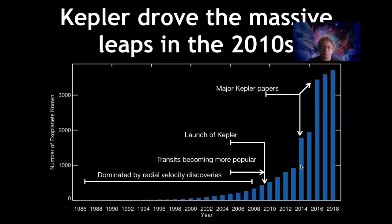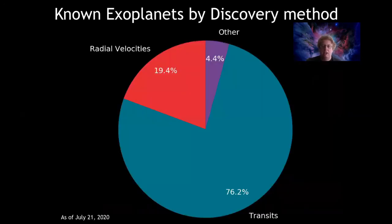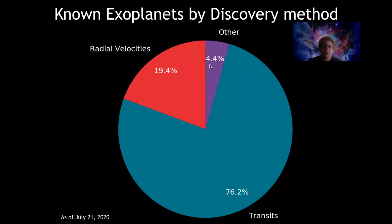You can see Kepler's impact in the discovery record. Here's the launch of Kepler in 2009 — it took a few years for NASA and the data products to get set to go, but once they were released, our knowledge accelerated. These big jumps represent individual papers from the Kepler mission that each reported the discovery of hundreds or even a thousand planets. So Kepler was the main driver of the big leaps in our knowledge in the 2010s. As a result, most of the planets we know about today — over three quarters — were discovered by the transit method, most of them by Kepler. Radial velocities still find a lot of planets but are secondary in sheer numbers, and there are a smattering of other techniques including direct imaging, which we'll discuss more in the next lecture.